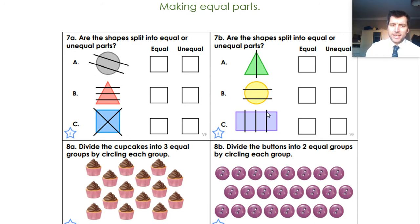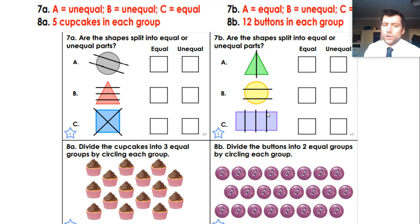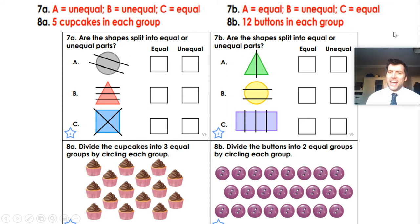Having a look then. 7A, it's unequal, unequal, and C is equal. Because although it's been twisted 45 degrees, we've got now four equal triangles, which make up our whole square. Then we've got 7B. Equal, equal, and unequal. Because our circle is split into unequal parts. And then our rectangle is split into four equal smaller rectangles. Our cupcakes are split into groups of five. And our buttons are split into groups of 12.